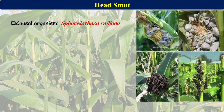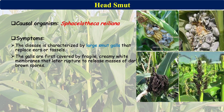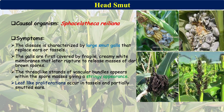Head Smut is another disease of maize, caused by Sphacelotheca reiliana. The disease is characterized by large smut galls that replace all or part of the tassels. The galls are first covered by fragile, creamy-white membranes that later rupture to release masses of dark brown spores. Thread-like strands of vascular bundles appear within the spore masses, giving a strange appearance. Leaf-like proliferations occur in tassels and partially smutted ears.